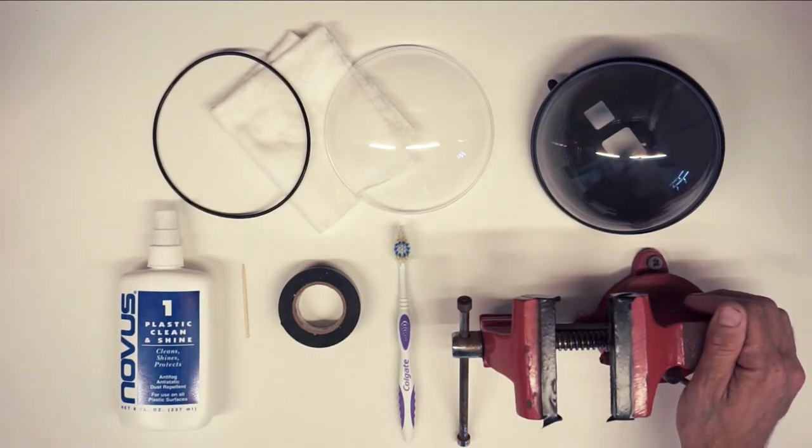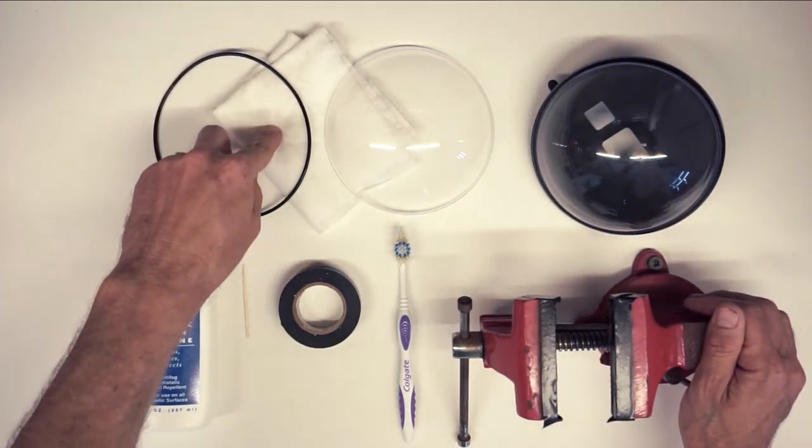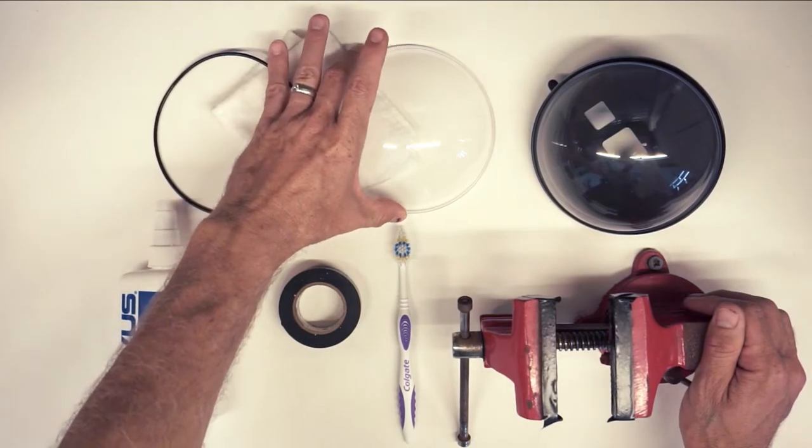When you order the replacement kit, it comes with a replacement o-ring, soft cloth, and a new piece of acrylic.